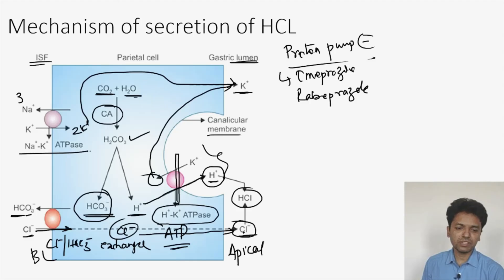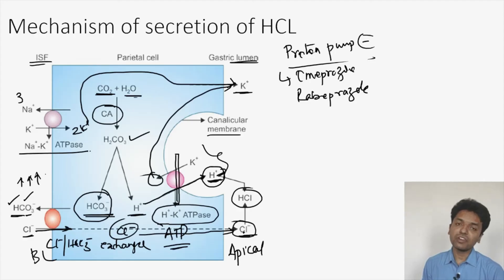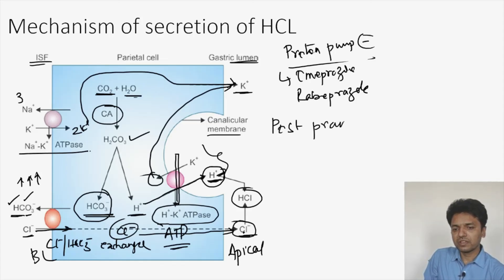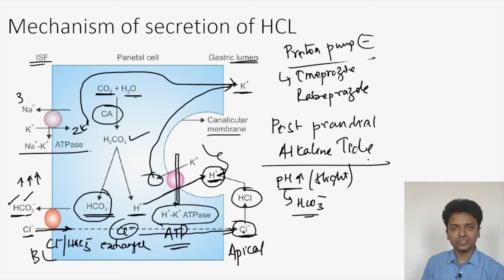An important point to remember: for every H⁺ ion secreted into the canaliculi, one HCO₃⁻ enters the blood. So when HCL secretion increases — as happens when we eat — the level of bicarbonate in the blood increases. This is called the postprandial alkaline tide: a slight increase in the pH of the blood due to the addition of bicarbonate into the bloodstream.